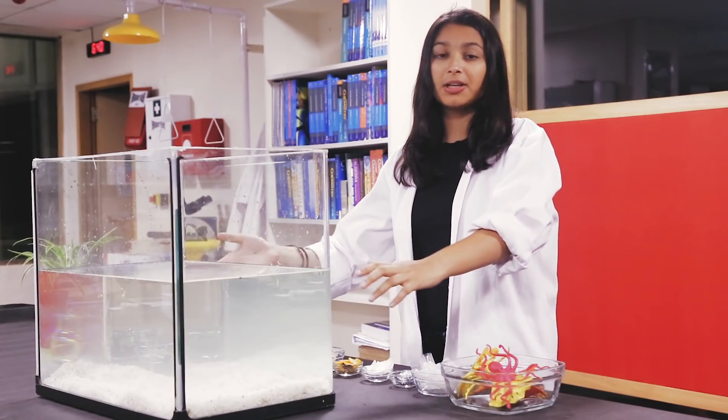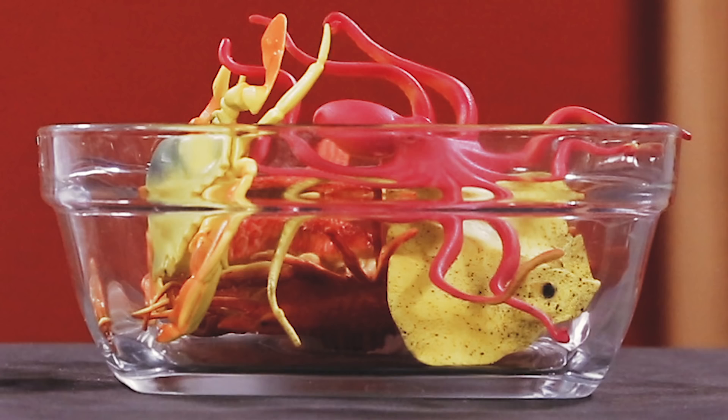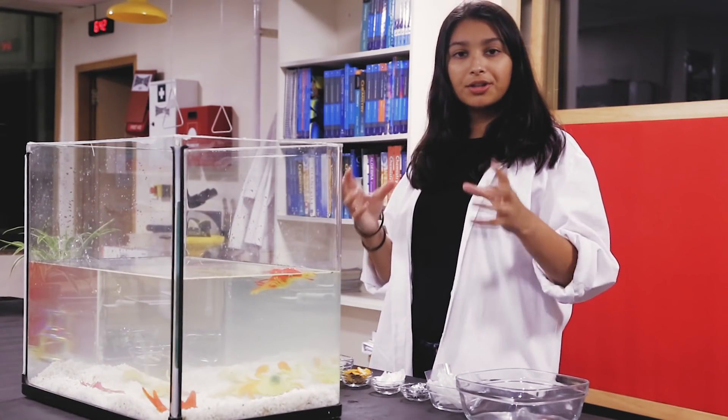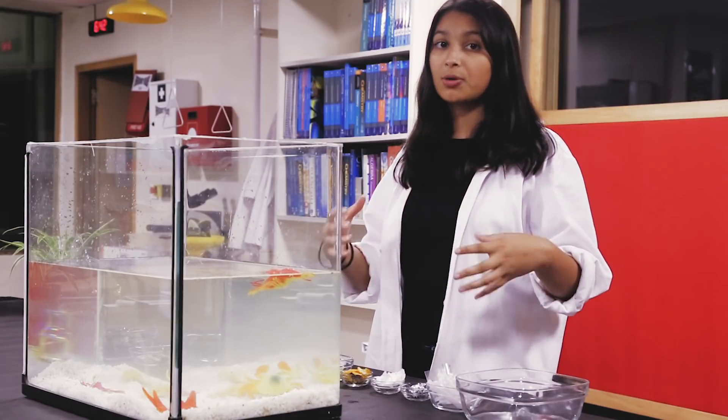This here is a fish tank, which I'm going to use to represent the ocean. First, I'm going to put some animals into a fish tank. Now I'm going to start putting in all the different components that we humans are putting into our ocean.